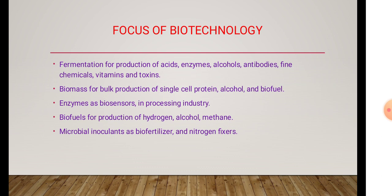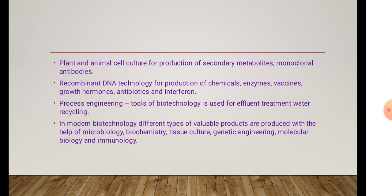Another focus area is microbial inoculants — biofertilizers and nitrogen fixers. We get various biofertilizers and nitrogen fixers. Plant and animal cells produce secondary metabolites like alkaloids and terpenoids, and also produce monoclonal antibodies. With the help of rDNA technology, the production of chemicals, enzymes, vaccines, growth hormones, antibiotics, and interferons — interferons are protein-based drugs, and through rDNA technology a lot of interferons are produced.